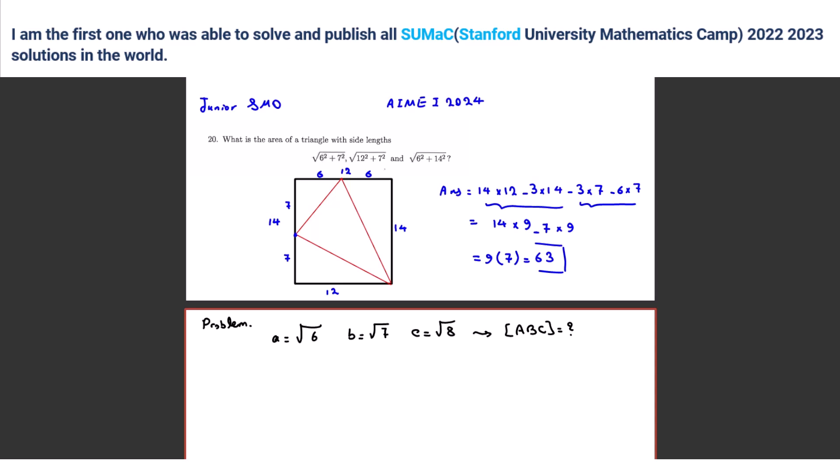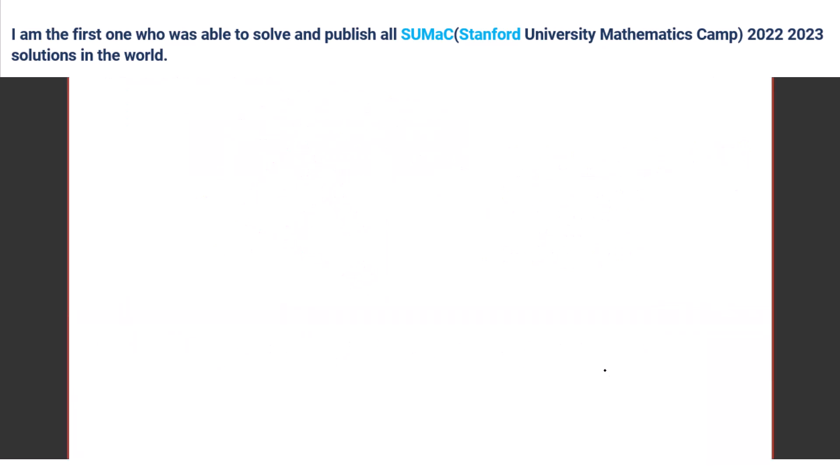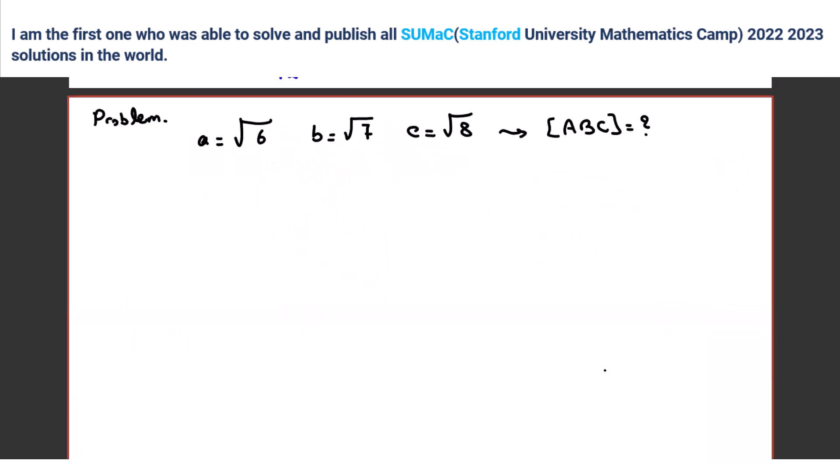Can I have a hint? Want a hint? Yeah. Okay, so probably you wanted to calculate it with Heron's formula, right? Yeah. But the problem here is that it's a bit hard to simplify, right? Yeah. So let's find a new form for Heron's formula.